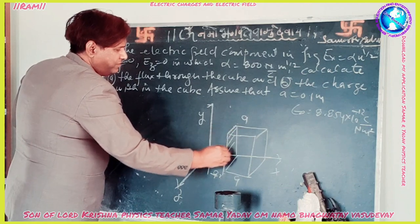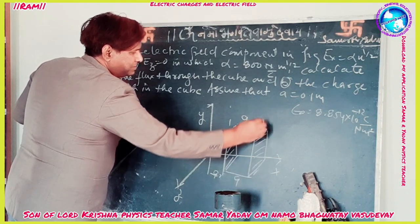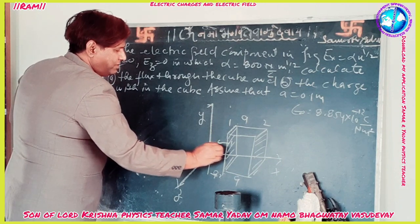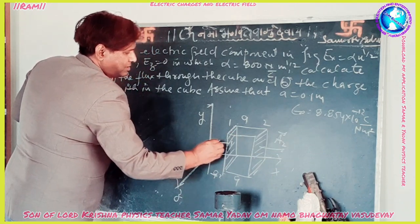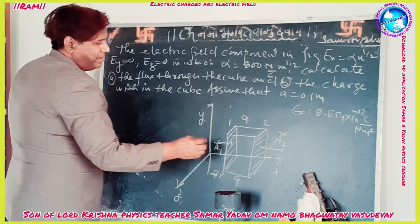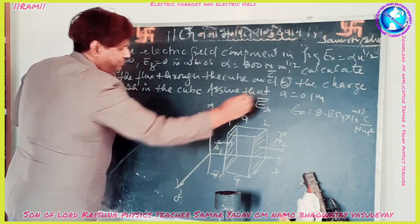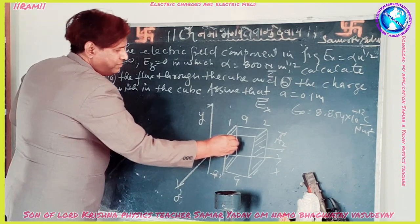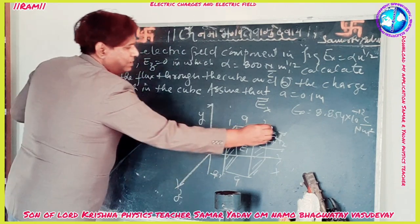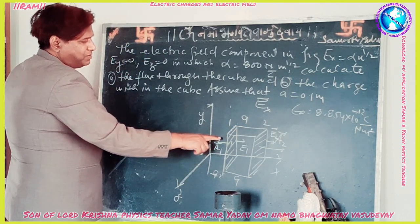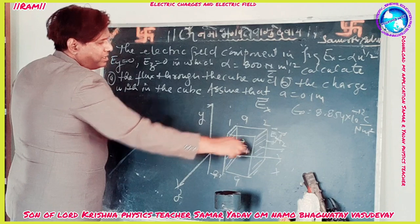There are six faces. The first face is here, and this is the second face. The area vector of the first face is A1, and the area of the second face is A2. All area vectors are normal to each face. The field E1 is on this face, and field E2 is here. The area vector and E1 are anti-parallel to each other, while E2 and its area vector are parallel to each other.